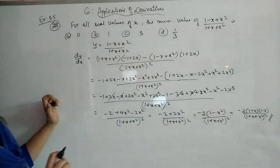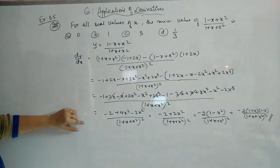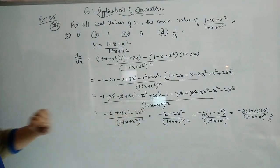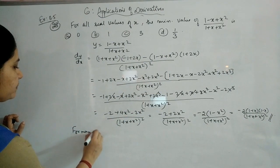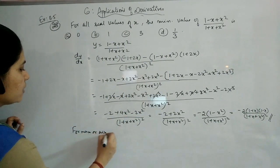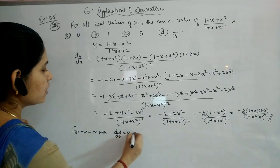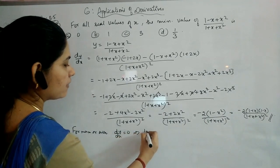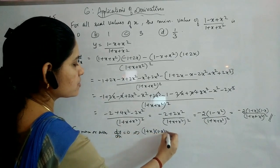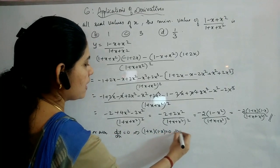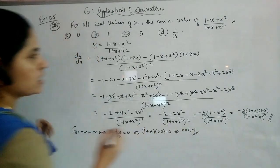This is your dy/dx. For maxima and minima, equating dy/dx to 0: (1 + x)(1 - x) = 0, giving x = 1 or x = -1. These are the critical points.